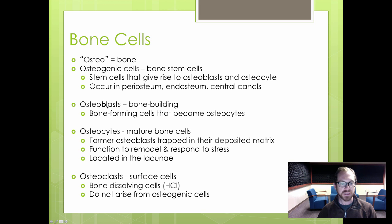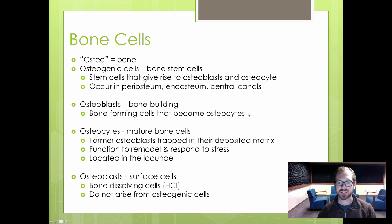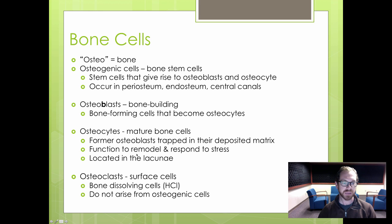Osteoblasts, with a B, are cells involved in bone building — they form bone. They become osteocytes. 'Osteo' means bone, '-cyte' means cell. Osteocytes are mature bone cells, formerly osteoblasts that became trapped in their deposited matrix. They function to remodel and respond to stress placed on your bones, and are located in structures called lacunae.